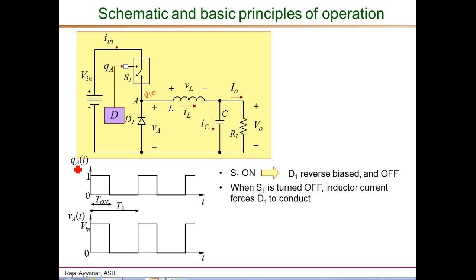The first waveform is Q_A, which is the switching signal given to the control switch S1. When Q is 1, it means S1 is on, and if Q is 0, S1 is turned off, and that defines the on interval and the off interval. T_on is the on interval. When Q is 1 or when the switch is on, the V_A, pole A with respect to the ground, is same as the input voltage. That is what is shown here.